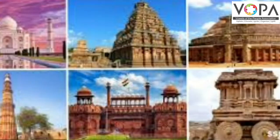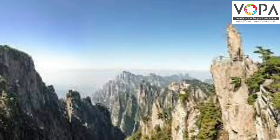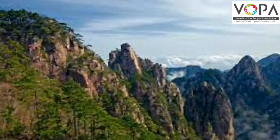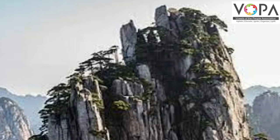World Heritage Sites can also be a combination of both cultural and natural areas. For example, Mount Hangshan in China is a site with significance to human culture because it played a role in historical Chinese art and literature. The mountain is also significant because of its physical landscape characteristics.